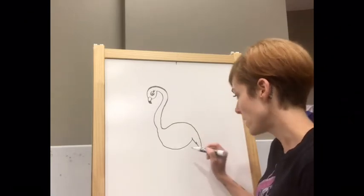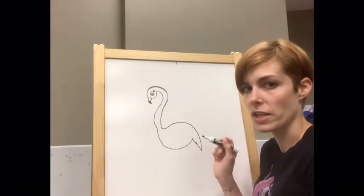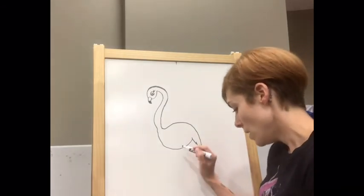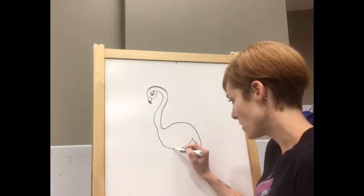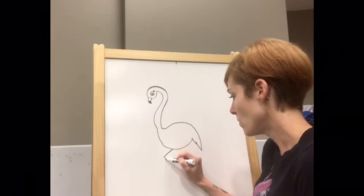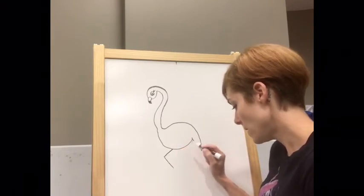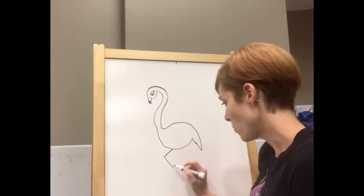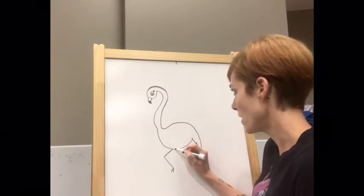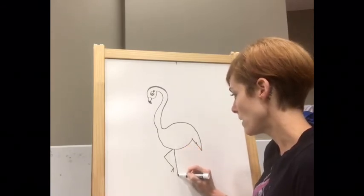Then we're going to do the legs. The legs are really easy. They're such skinny legs, you can just do lines. They like to stand with one up usually. Let's do one leg up like this and give it more of a bird foot here. Then one leg straight down like that.